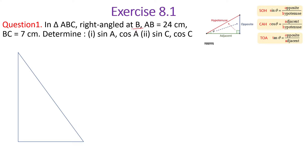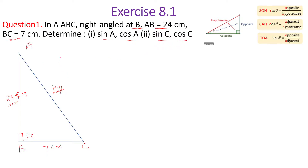In triangle ABC, the right angle is at B — this is a 90 degree angle. If this is the right angle, then AC is obviously the hypotenuse. AB is 24 centimeters and BC is 7 centimeters. We need to determine sine of A, cosine of A, sine of C, and cosine of C.